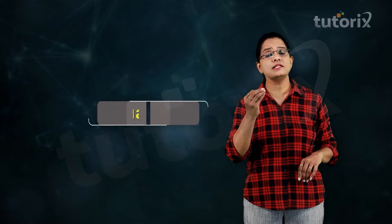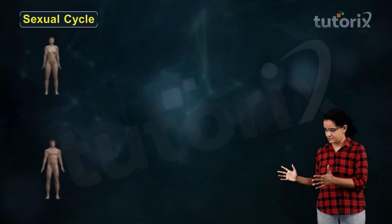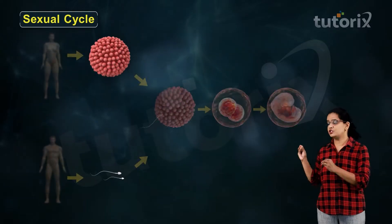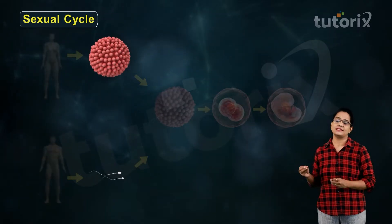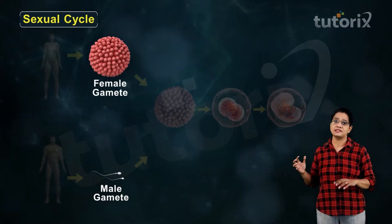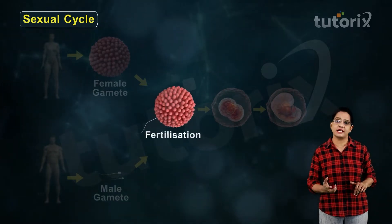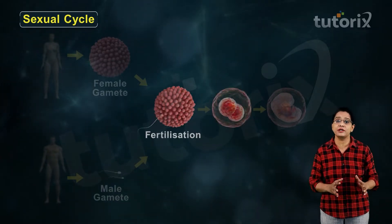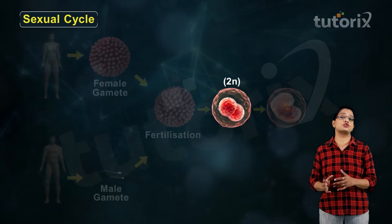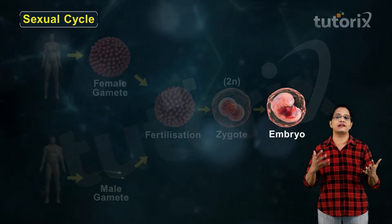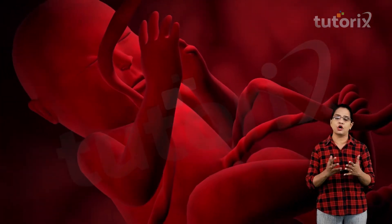A typical sexual cycle looks like this: organisms produce two types of gametes, that is the male and female gametes. These gametes fuse together by fertilization and produce a diploid cell called the zygote, and this zygote undergoes further cell divisions to produce a new organism.